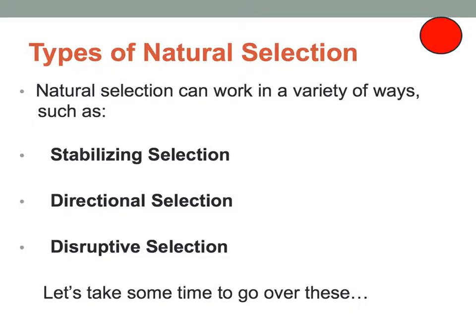There are different types of natural selection — three of them: stabilizing selection, directional selection, and disruptive selection. We're going to talk about each of those coming up here in a second.